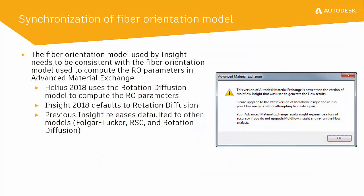When a model is being characterized in Helios 2018, the Rotation Diffusion Fiber Orientation Model is used. This model needs to be consistent with the fiber orientation model used in the Molflow simulation. The default fiber orientation model used in the Molflow simulation is version-specific. Versions 2017-R2 and newer use the Rotation Diffusion Model, but prior to 2017-R2, either the RSC or Folger-Tucker models were used. In order to ensure consistent fiber orientation models, there are now warnings issued in AME that will alert the user to this issue and will provide guidance on resolution.